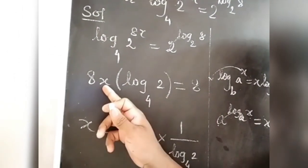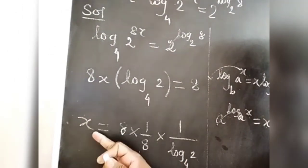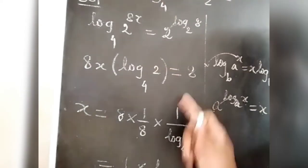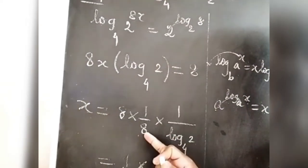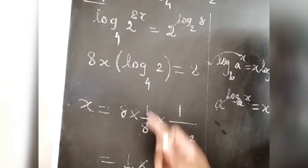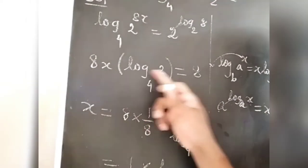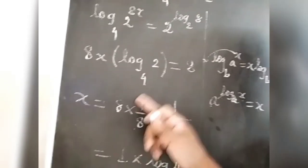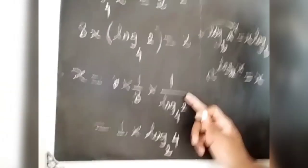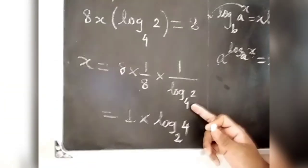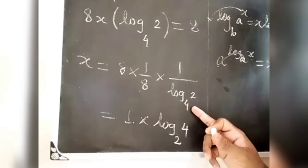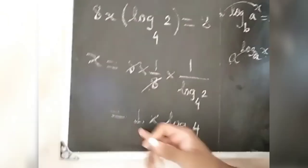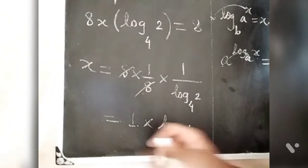Then we have to find the value of x. So it's solved — 8x is a product, and 1x is a product. Log 2 base 4. Then 1x times log 2 base 4. Now there's a product, and 1x is the product.